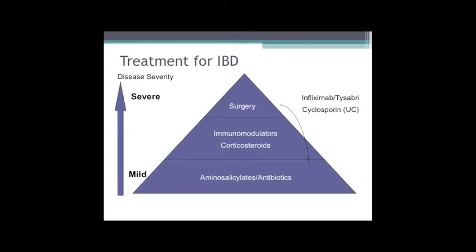Treatment is very similar for both Crohn's and ulcerative colitis. We may start with antibiotics and aminosalicylates - aminosalicylates are the mainstay for UC; sulfasalazine, Pentasa. They're less useful in Crohn's because aminosalicylates are designed for ileal or colonic release and don't reach higher in the small bowel. We then move to immunomodulators like Imuran, azathioprine, methotrexate, corticosteroids, and biologics such as infliximab and other anti-TNFs: Humira, Cimzia, and Tysabri.